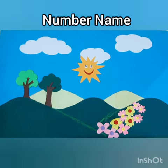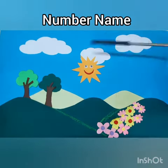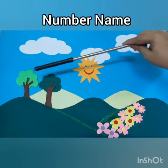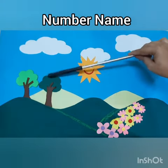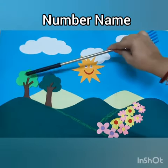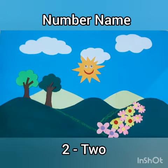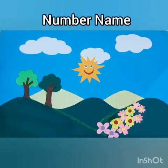Now let's see how many trees do we have in this picture. We have two trees. The spelling of two is T-W-O, 2.